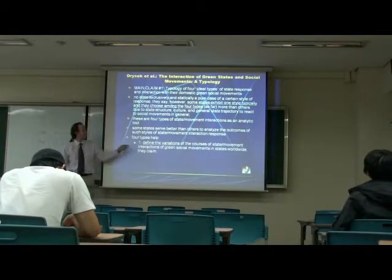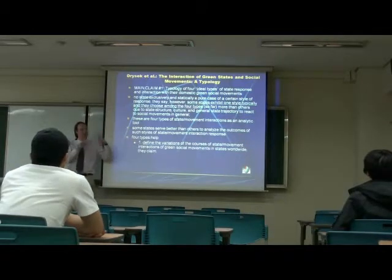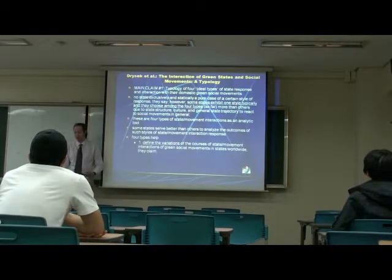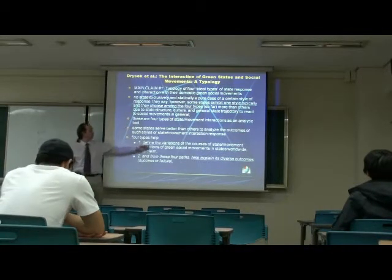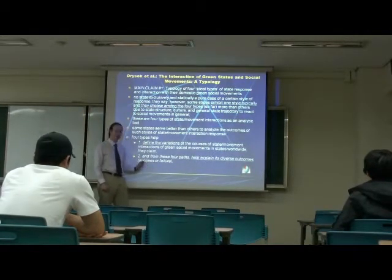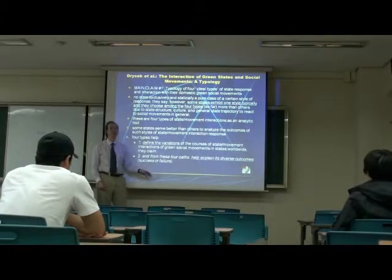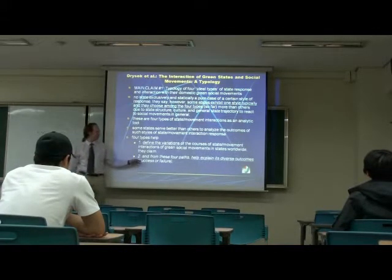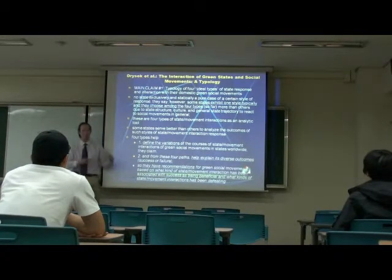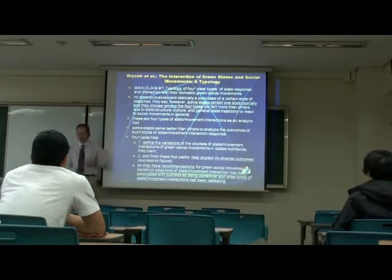The four types help define the variations of state politics and green politics around the world — it's not the same environmental movement everywhere, it's very different culturally and politically. Also, if you define the variations, you can explain diverse outcomes of how successful or how much of a failure these movements are. And if you have an argument about success or failure, they have suggestions for what would be the best kind of social movement and state response.